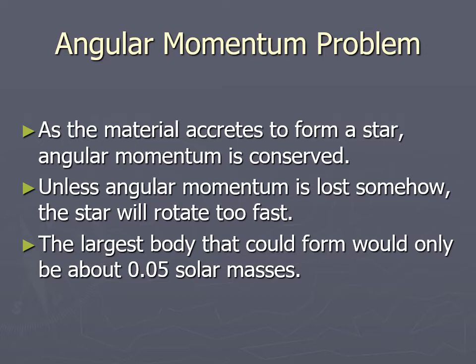This idea of how stars form originated a couple hundred years ago, but more recently the mathematics has shown it's more complicated. The accretion disk gets spinning so fast that it causes the protostar to spin so fast it would shred itself — tear itself apart — if it got more than about 0.05 solar masses, meaning only up to about 5% the mass of the sun. Since there are many stars bigger than that, something else has to be happening.